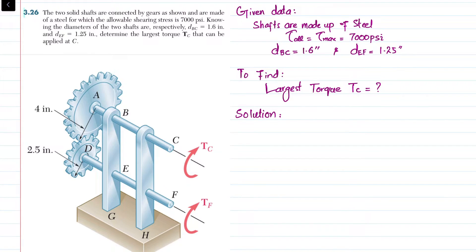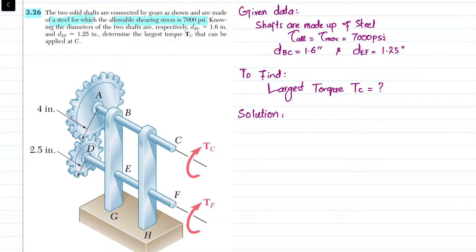Welcome back. Today we are going to solve problem 3.26. In this problem, two solid shafts are connected by gears as shown in the figure, and are made of steel for which the allowable shearing stress is 7000 psi. The diameter of shaft BC is 1.6 inch and shaft DEF is 1.2 inch. The gear at point A has a radius of 4 inches and the gear at point D has a radius of 2.5 inches.